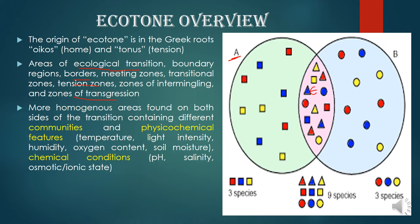The ecotone E is the zone between the forest ecosystem A and the grassland ecosystem B. This open forest area is where the tree density and canopy cover is much less — they do not have a full canopy cover and their density of trees is much less. But that doesn't mean there will be lesser diversity.